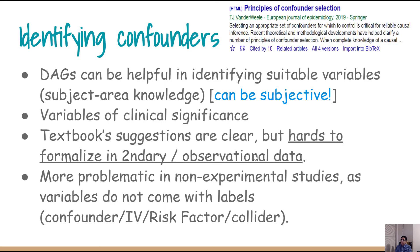DAGs can be helpful in identifying suitable variables based on the DAG you draw, but drawing a DAG requires subject area knowledge and can be subjective. If a variable is of clinical significance, we usually try to include it and figure out which combination gives a DAG without any biasing path. In theory, it is hard to formalize a complete DAG, especially from secondary or observational data sources.